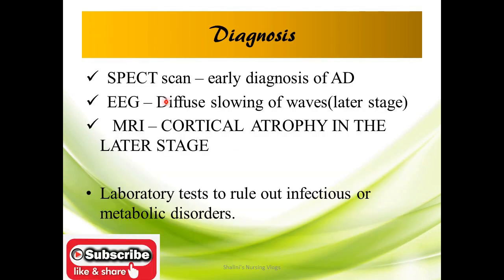Diagnosis is done with the help of SPECT scan — single photon emission computed tomography — which is done at an early stage. EEG will show diffuse slowing of waves, as plaques and tangles block the passage of signals, making EEG useful at a later stage. MRI is also done, showing cortical atrophy in the later stage. Laboratory tests are performed to rule out infections and metabolic disorders, since certain conditions can also cause disorientation in individuals.